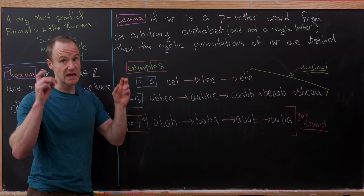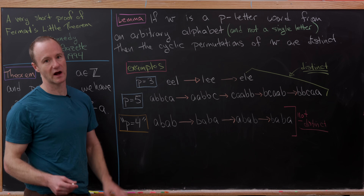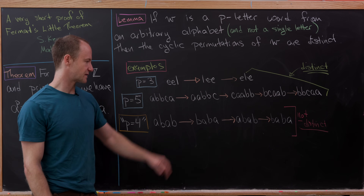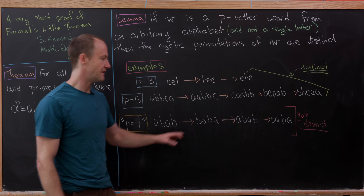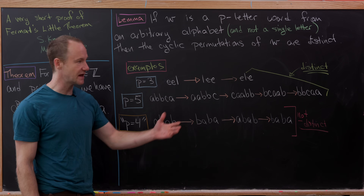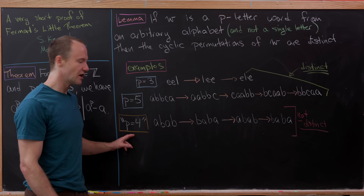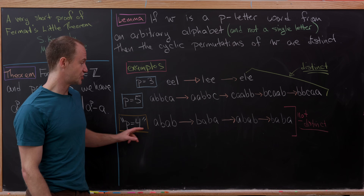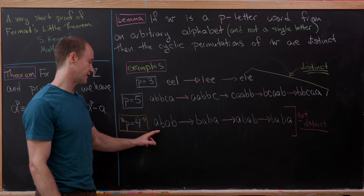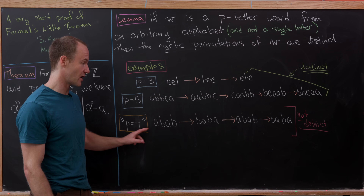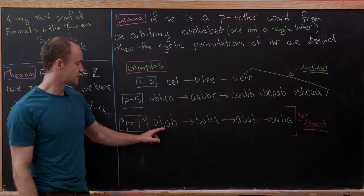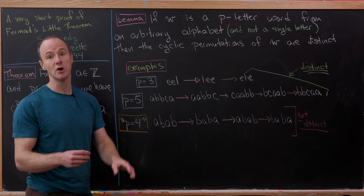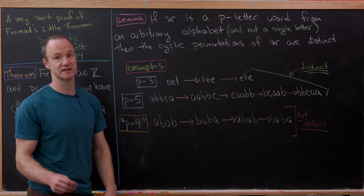Now let's look at the p equals four case — obviously four is not prime. We'll take our word to be a, b, a, b. The first cyclic permutation gives b, a, b, a. The next gives a, b, a, b — and then again b, a, b, a. Notice that the first and third permutations are the same, and the second and fourth are the same. So we do not have distinct words as we cyclically permute. This happens because four is not prime.